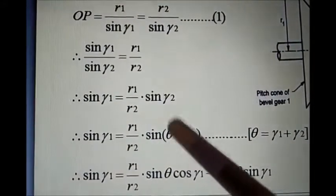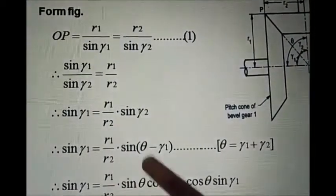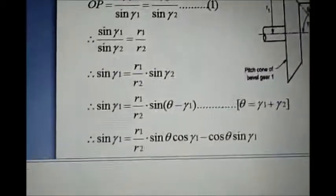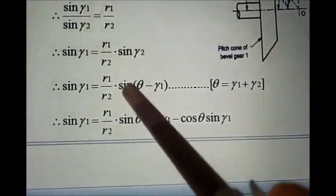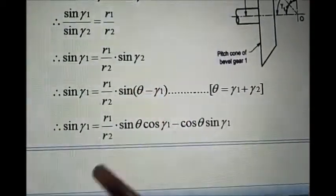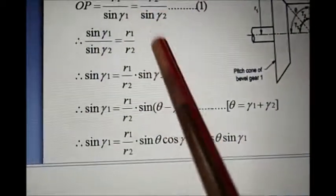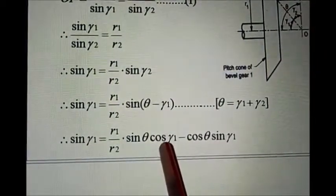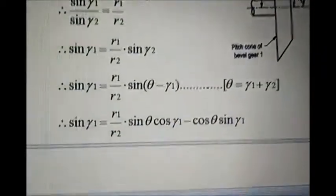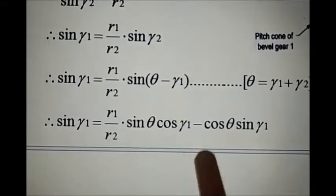Since gamma 2 equals theta minus gamma 1, we substitute: sine of gamma 2 equals sine of (theta minus gamma 1). Applying the sine subtraction formula — sine(A minus B) equals sine A cos B minus cos A sine B — we get: sine theta times cos(gamma 1) minus cos theta times sine(gamma 1).